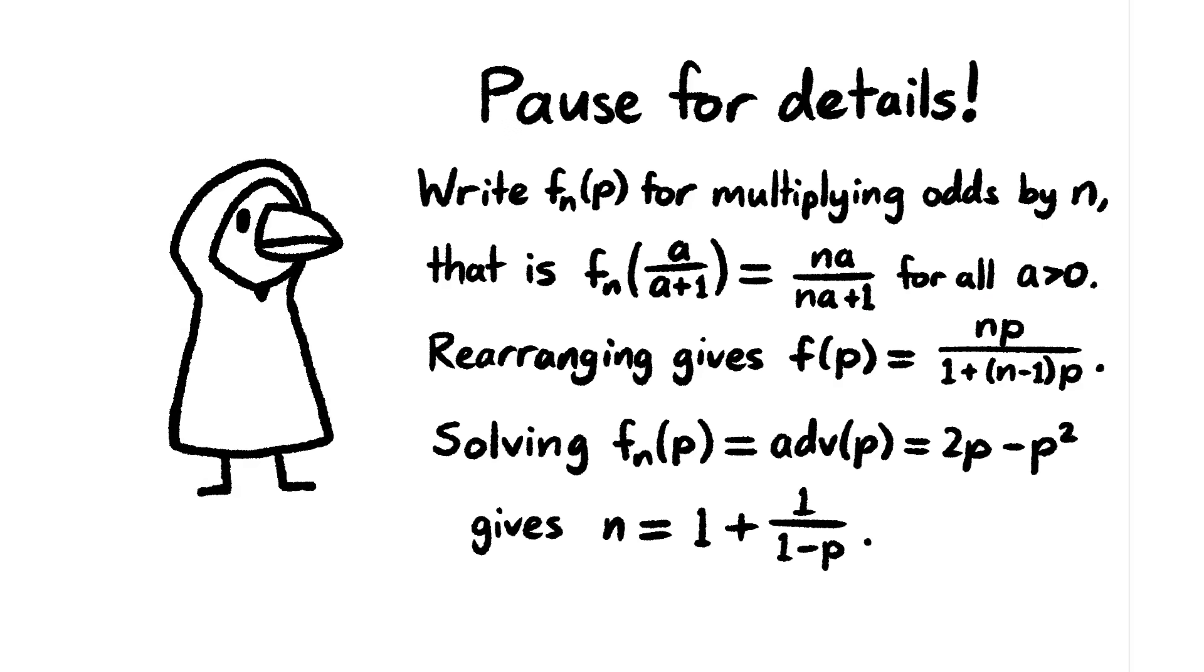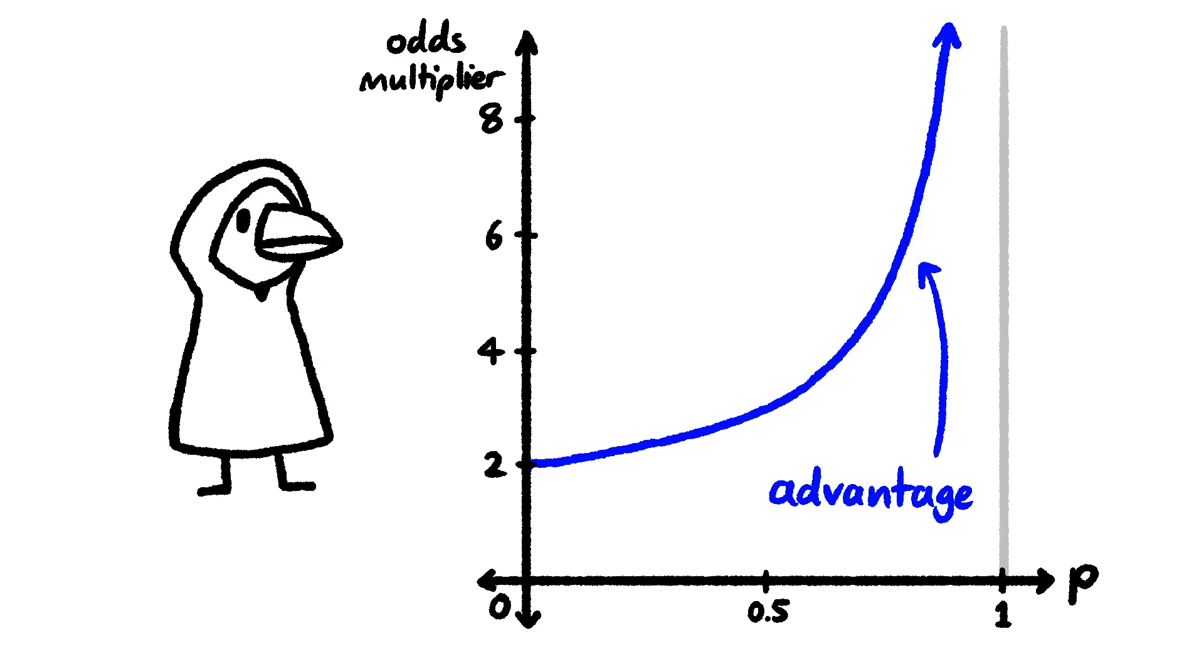So how do advantage and disadvantage change the odds? A little bit of algebra gives us the answer. For very small probabilities, advantage doubles the odds. At 50%, advantage triples the odds. And at higher probabilities, advantage increases the odds even more. So it actually is as imbalanced as we saw before. Advantage makes unlikely checks only slightly more likely, but it makes likely checks almost certain.